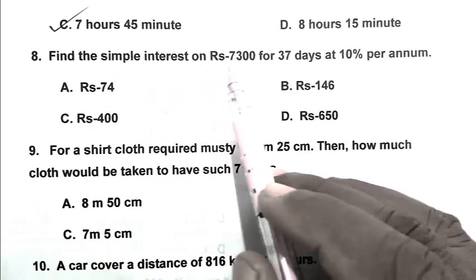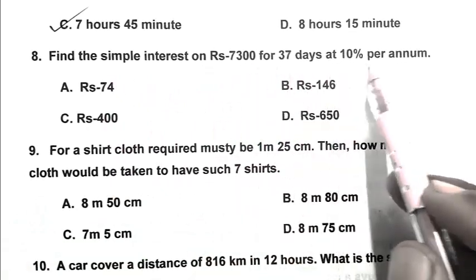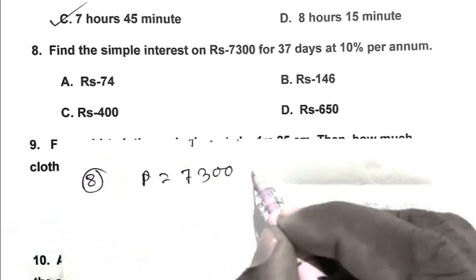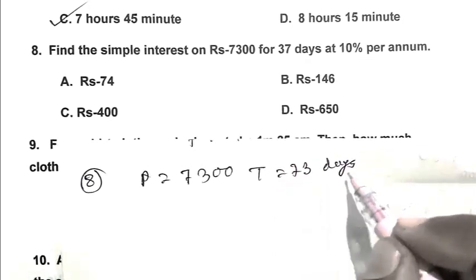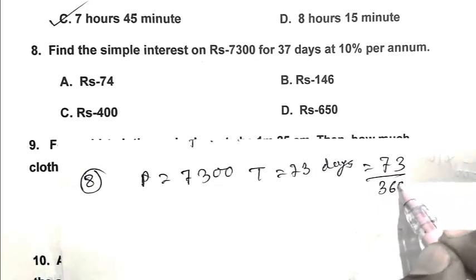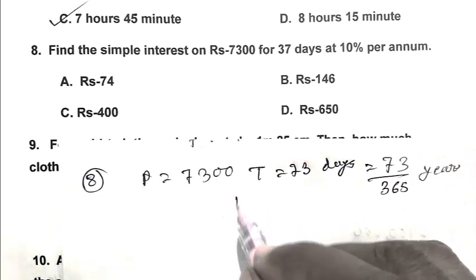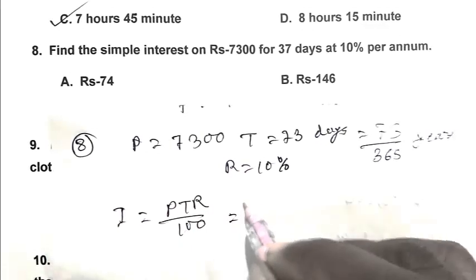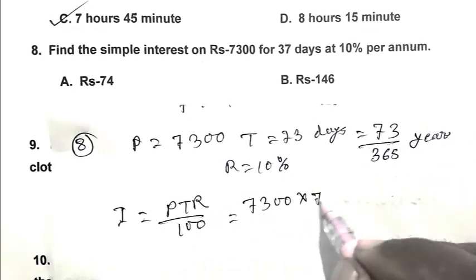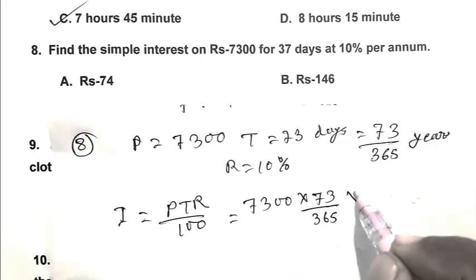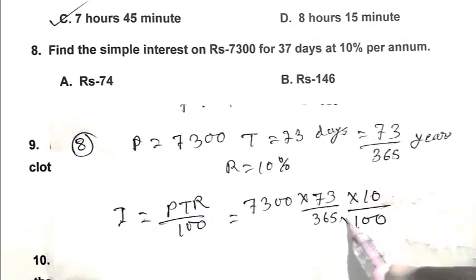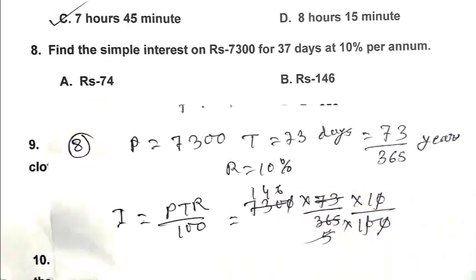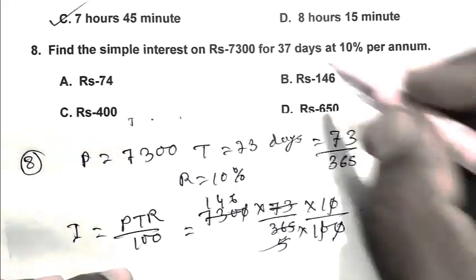Question number 8: Find the simple interest on rupees 7,300 for 73 days at 10 percent per annum. So friend, we calculate from the formula: principal is 7,300, time is 73 upon 365 years, rate is 10 percent. Interest = PTR upon 100, so P = 7,300, T = 73/365, R = 10, giving us 146. So friend, 146 is the right answer. B is the right answer.